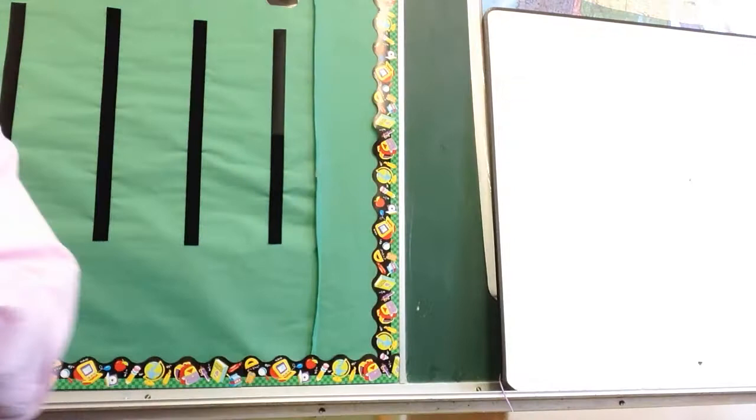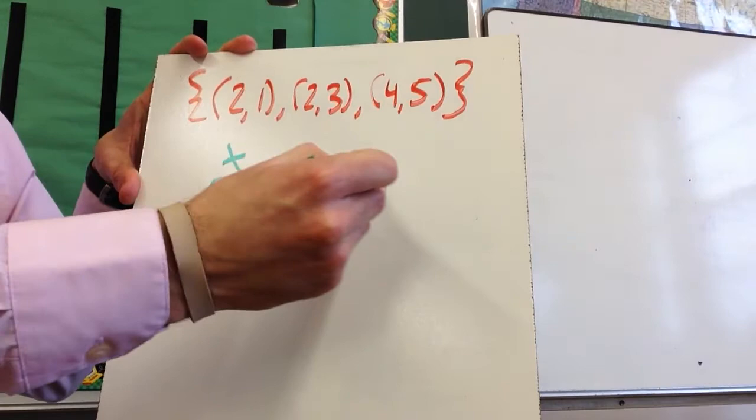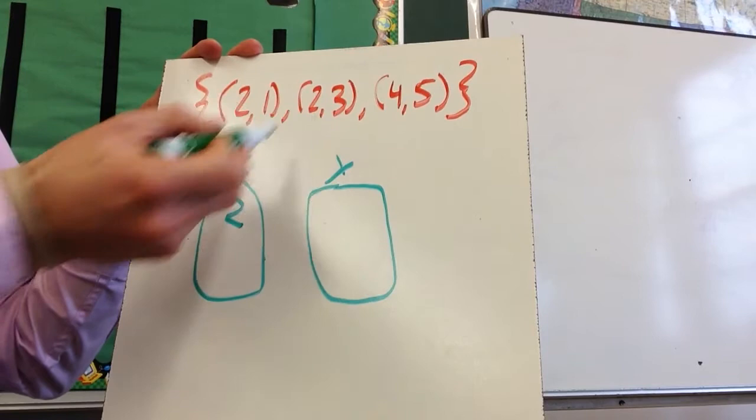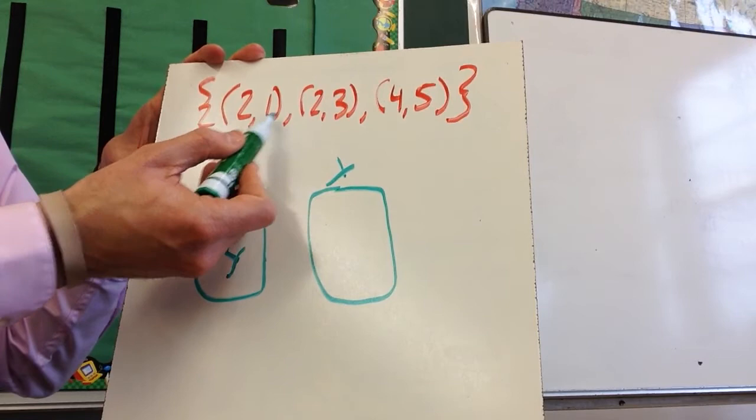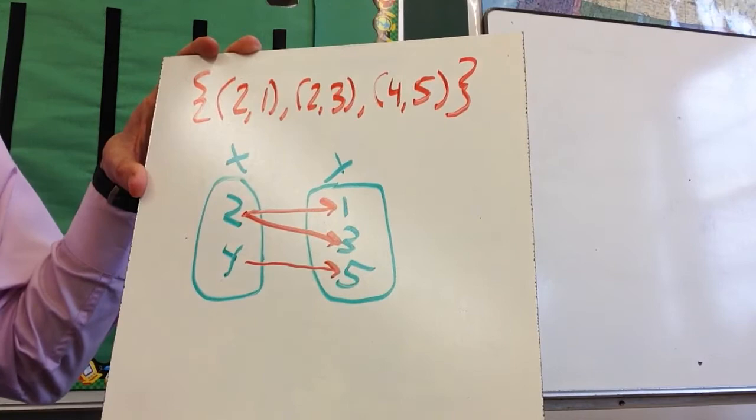Alright, let's take a look at one that is not a function. If this is my x and this is my y, it doesn't really matter how you draw these. Mine are kind of oval, they can be rectangle or oval or whatever you want. So the x is going to be a 2. I'm going to repeat the 2 so I'm not going to write it again. And then 4. And then the y's are 1, 3, and 5. Now what you'll notice when I correspond the 2, the 2 goes here, 2 also goes there, and then the 4 is here.